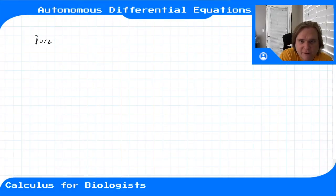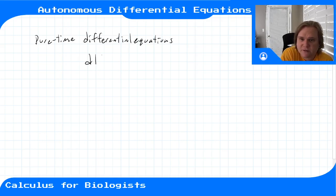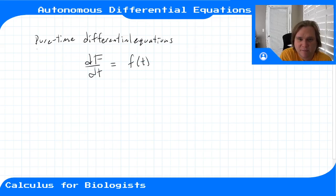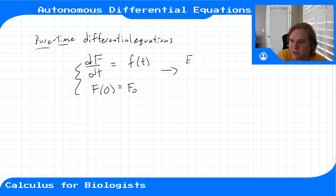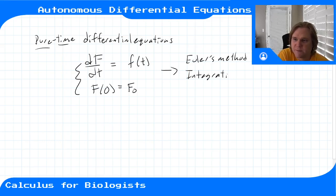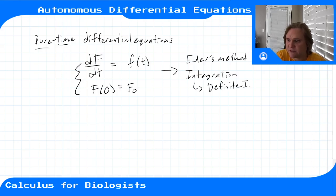So far we've covered how to think about pure time differential equations, where the right-hand side function — some differential equation dF/dt — was some function of time, purely a function of time. We thought about how to solve problems where we're given the initial condition F(0), using Euler's method and via integration. With integration, we learned about definite integrals, Riemann sums, and several different techniques.